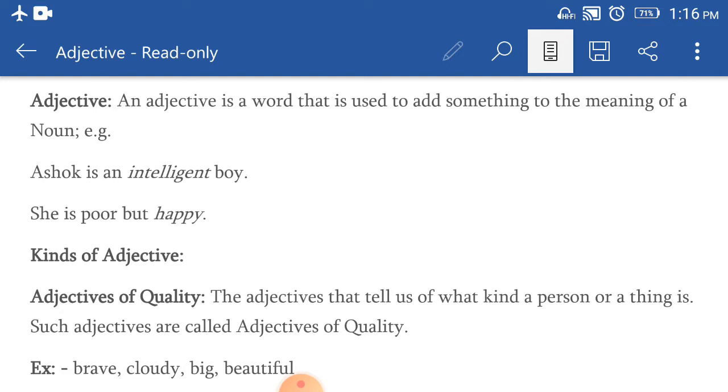An adjective is a word that is used to add something to the meaning of a noun. For example, Ashok is an intelligent boy. Intelligent is an adjective.